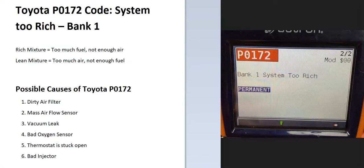Today I'm talking about a Toyota with the P0172 code — what it is and how you go about fixing it. The P0172 is a system too rich bank 1 code, meaning the onboard computer is seeing a problem with the air-fuel ratio mixture going into the engine. Mainly it's seeing too much fuel and not enough air, so we need to troubleshoot why.